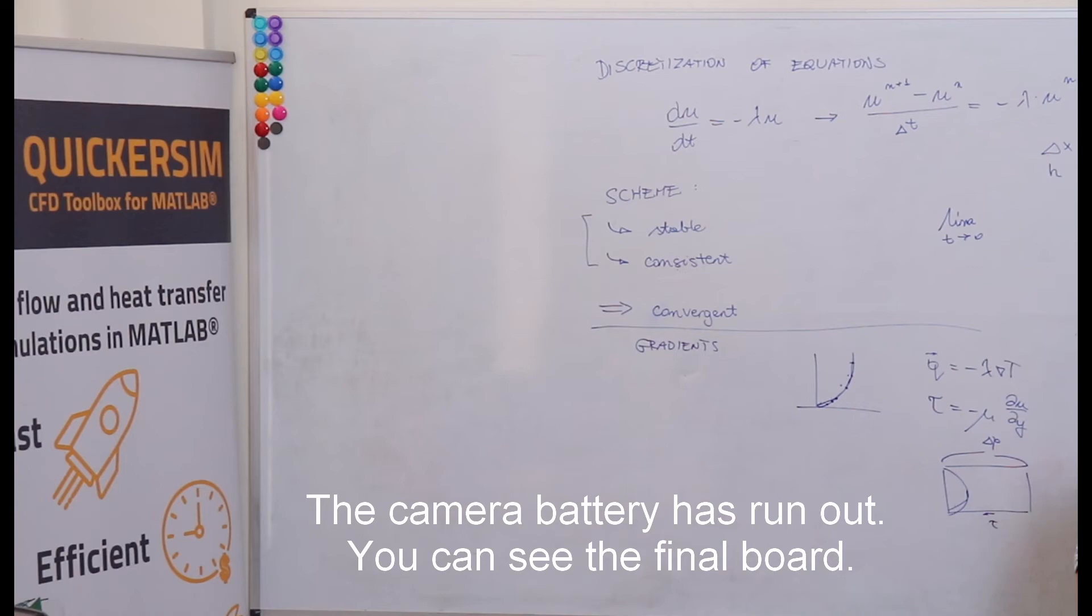It's important to see, does your algebraic scheme approximate the differential problem or does it make any additional terms? It should not add any additional terms when going with the time step size or the mesh size to the limit of zero, like in the limit of t approaching zero. This one should go into this one. This means consistency.